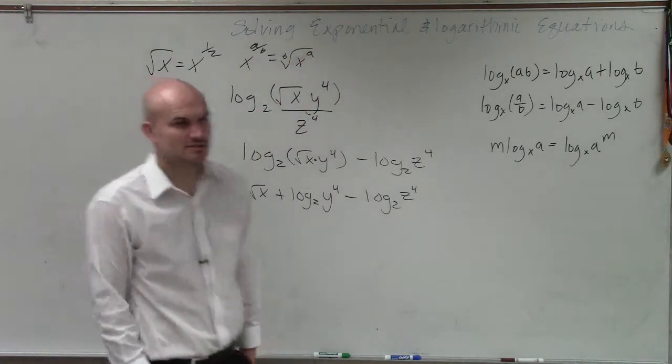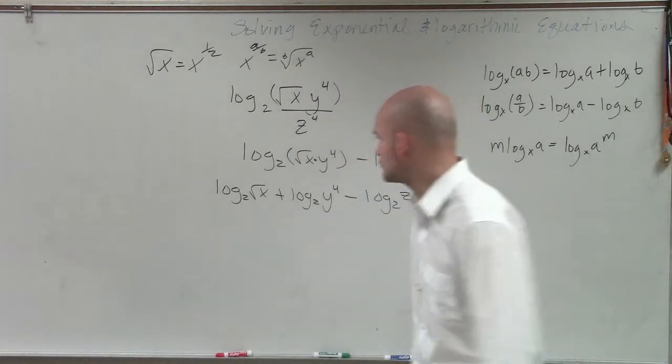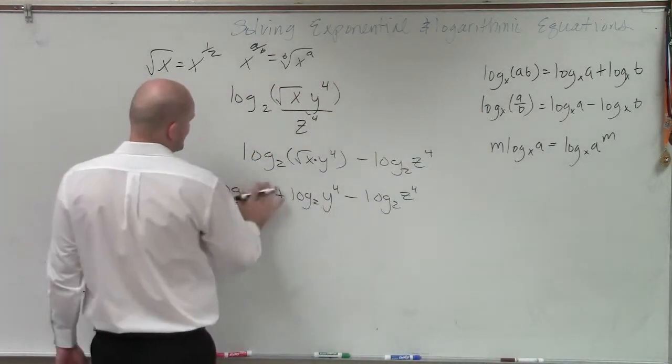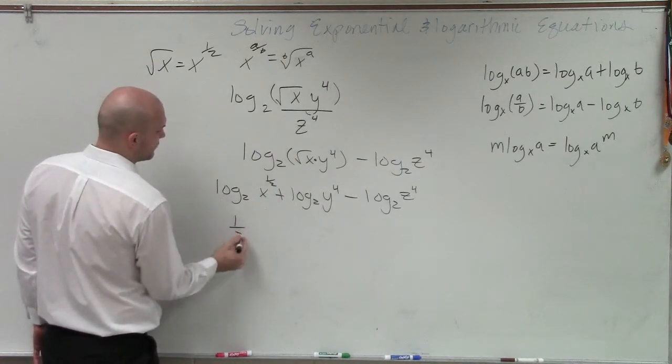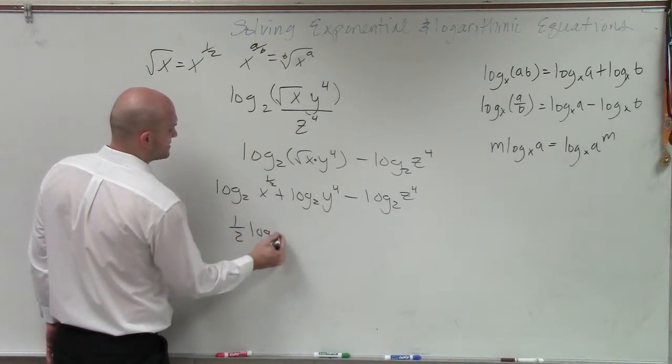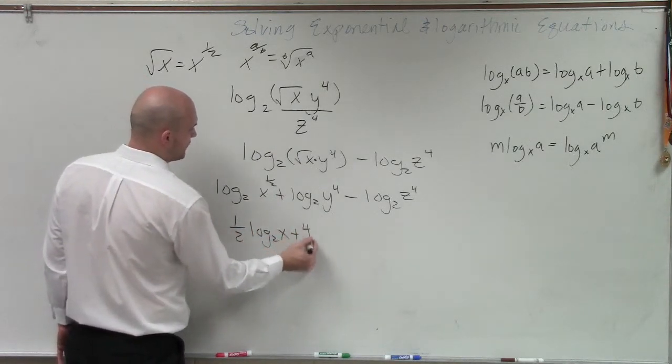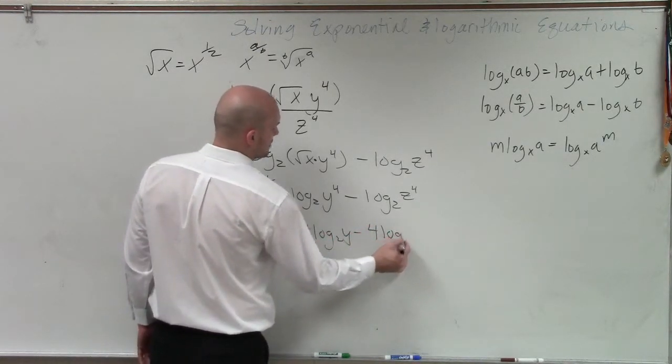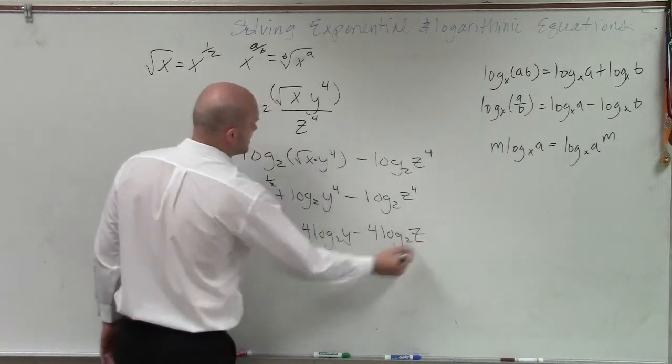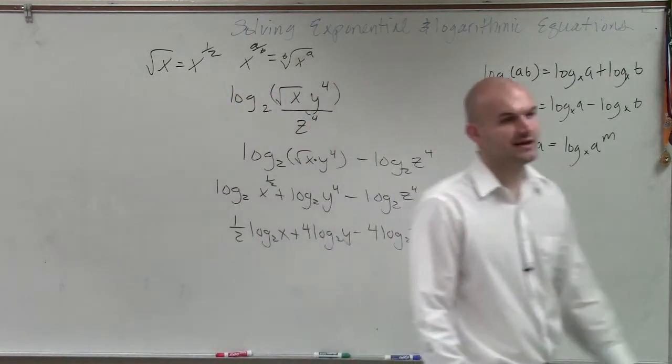Remember rational exponents? So therefore, instead of writing the square root, I can rewrite this as one-half. Then I bring this down. So I have one-half log base 2 of x plus 4 log base 2 of y minus 4 log base 2 of z. And that would be your final answer.